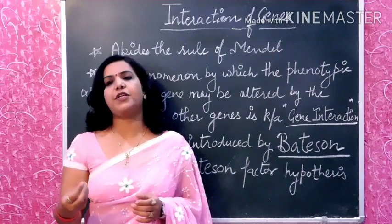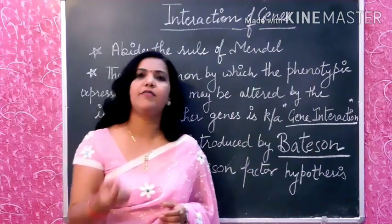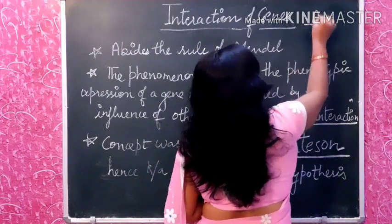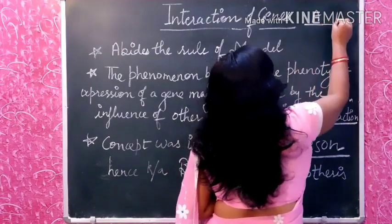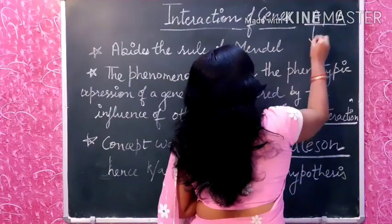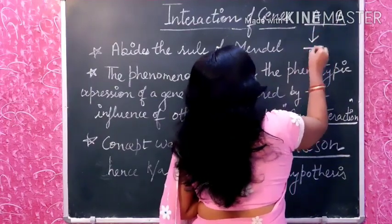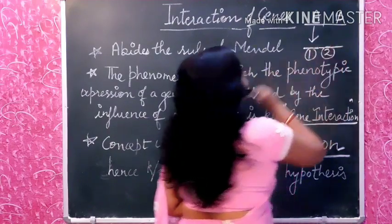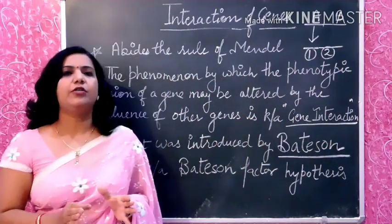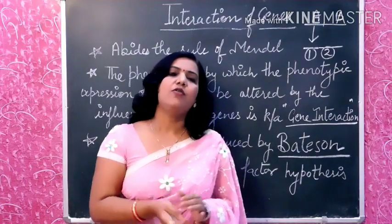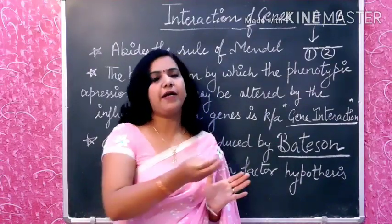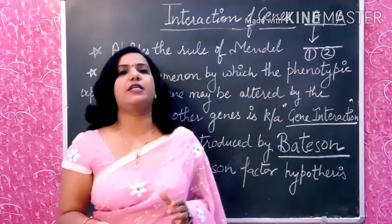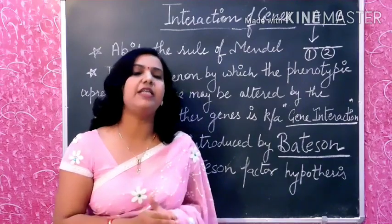According to Mendel, one expression is governed by one gene. Suppose this is gene A and this is gene B. Gene A has phenotypic expression one, and gene B has phenotypic expression two. So the expression of both genes A and B is independent — meaning A and B are not interacting with each other.